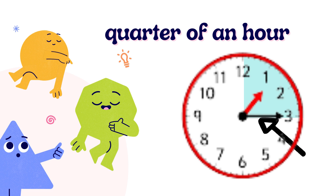Now, let's look at the shaded portion on the clock face. When we have the shaded portion on the clock face — quarter — we will say quarter of an hour. Say with me: quarter of an hour. Because the shaded portion on the clock face is quarter, as the minute hand is pointing to number 3.